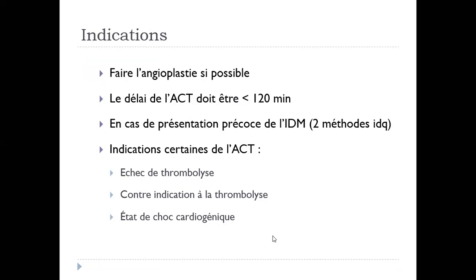Les indications : dès que possible, faire l'angioplastie. Si le délai est inférieur à 120 minutes entre le moment où on a fait le diagnostic et le moment où le patient arrivera en salle de cathétérisme où on va passer le guide, on va opter pour l'angioplastie. C'est-à-dire, un patient consulte aux urgences. Le patient consulte à H2 de la douleur, et on a une salle de cathétérisme disponible 24 sur 24, donc on va opter pour l'angioplastie. On ne va pas attendre.